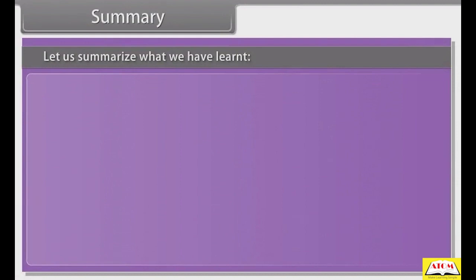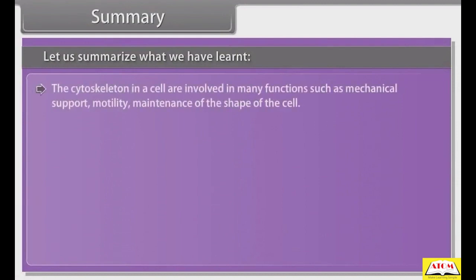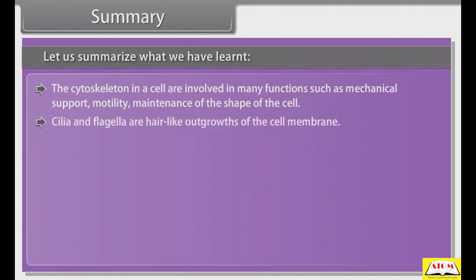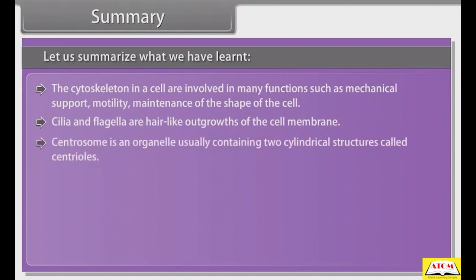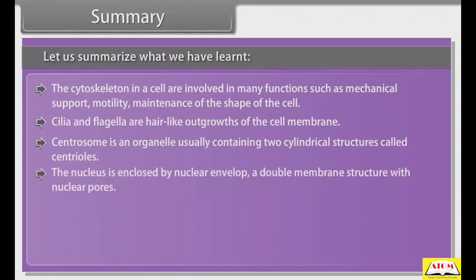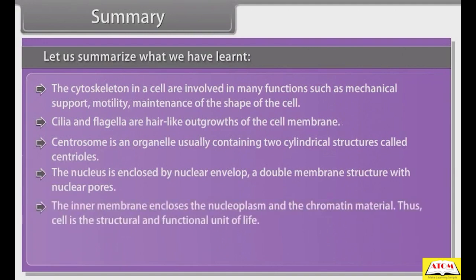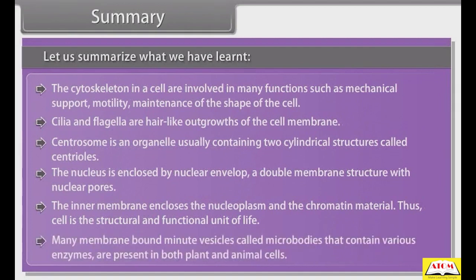Let us summarize what we have learnt. The cytoskeleton within the cell is involved in many functions such as mechanical support, motility, and maintenance of the shape of the cell. Cilia and flagella are hair-like outgrowths of the cell membrane. Centrosome is an organelle usually containing two cylindrical structures called centrioles. The nucleus is enclosed by a nuclear envelope, a double membrane structure with nuclear pores. Many membrane-bound minute vesicles called microbodies, containing various enzymes, are present in both plant and animal cells.